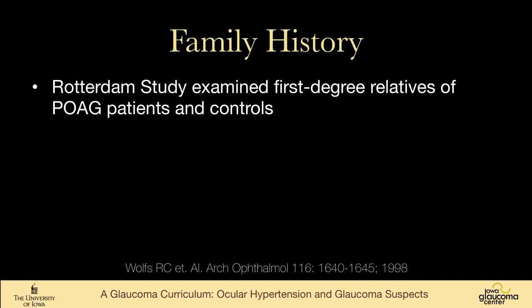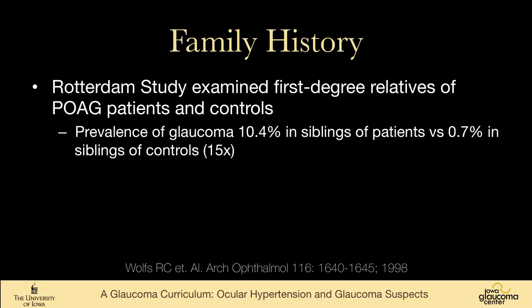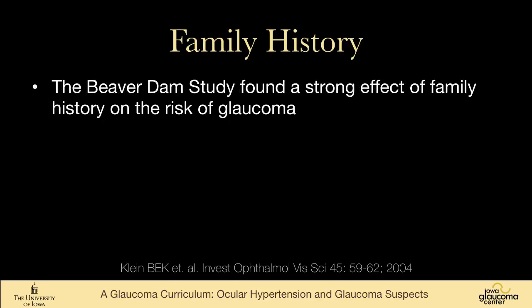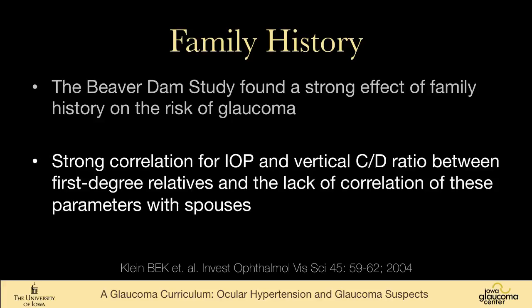Lastly, family history. There are some patients who have very strong family histories of glaucoma. We certainly see this in people with myocilin juvenile-onset glaucoma. But if we look at adult primary open-angle glaucoma, the Rotterdam Study found that the prevalence of glaucoma in siblings of patients was 10.4% versus 0.7% in siblings of controls — a 15-fold increase in risk. The Beaver Dam Study also found a strong effect of family history on the risk of glaucoma, and a strong correlation for pressure and vertical cup-to-disc ratio between first-degree relatives, with a lack of correlation when a spouse was used as a control.